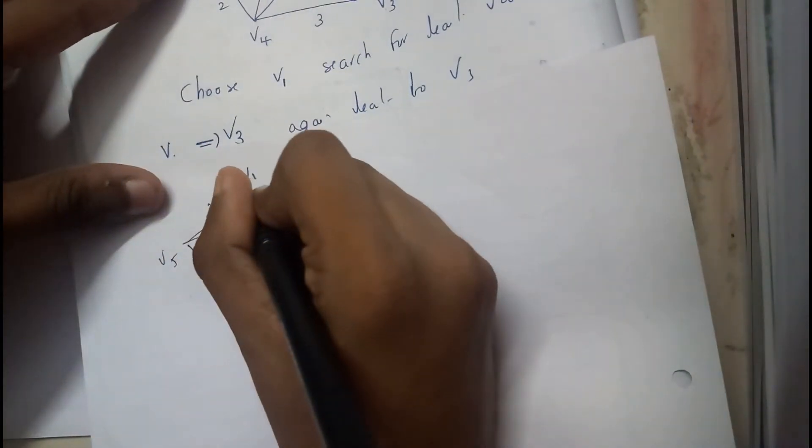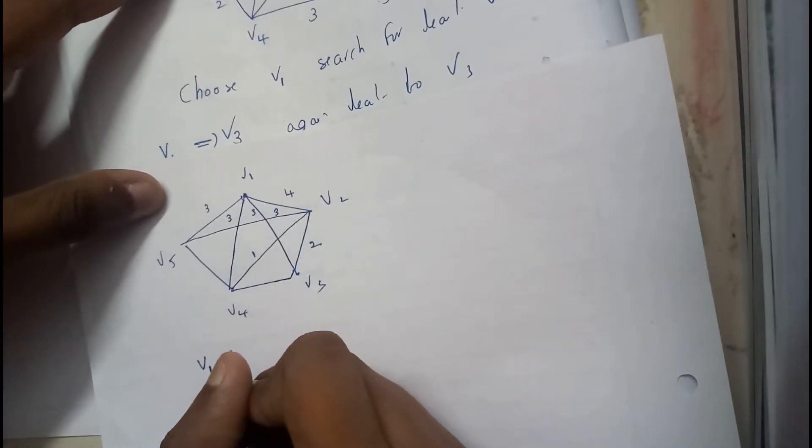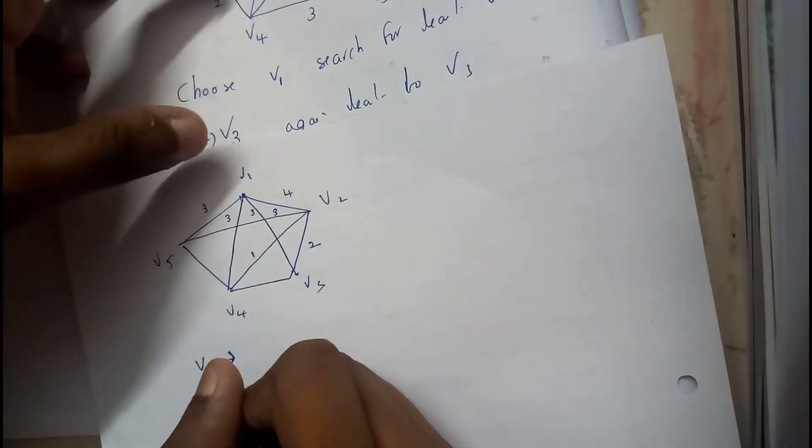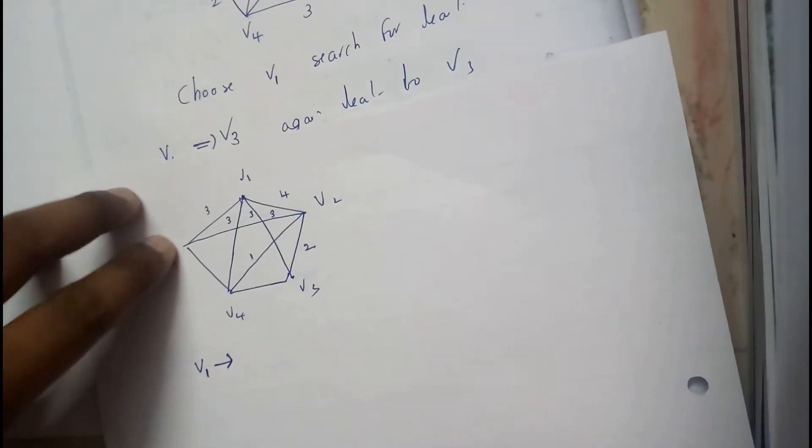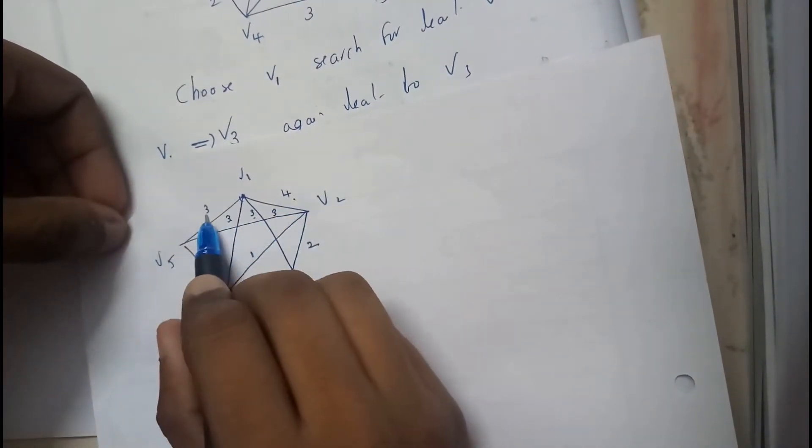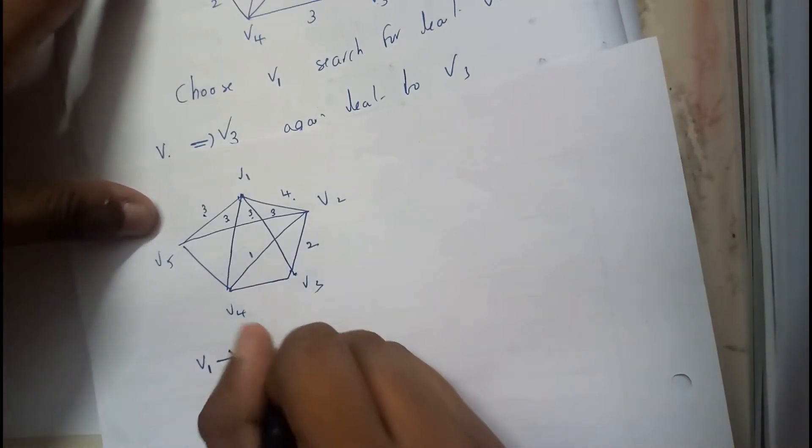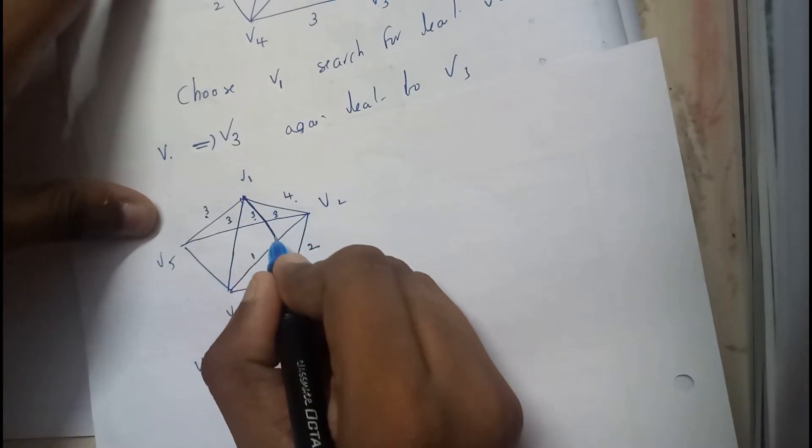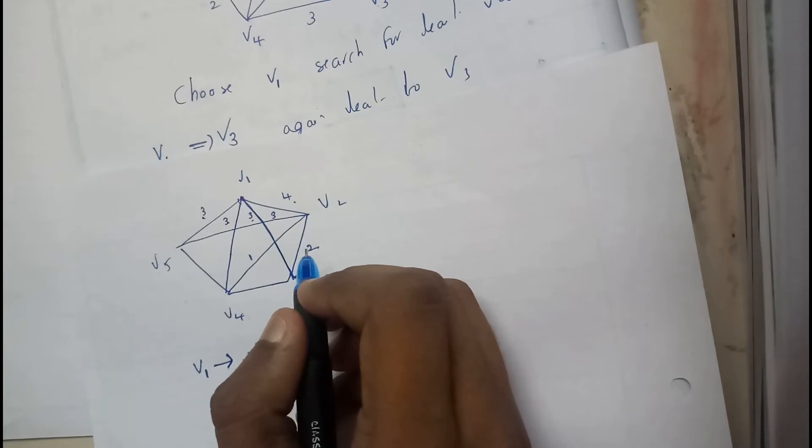Let us assume the starting vertex is V1. V1, the least distanced edge, what is it? We got 1 with 4, 1 with 3, 1 with 3, 1 with 3. So select any vertex with 3. I'm gonna select V3. Now this is done.